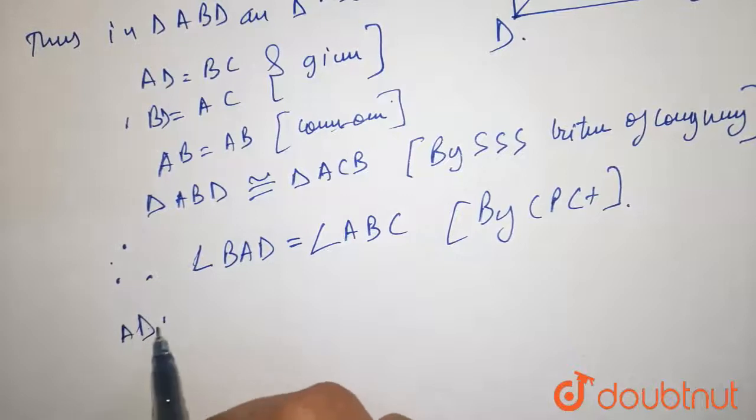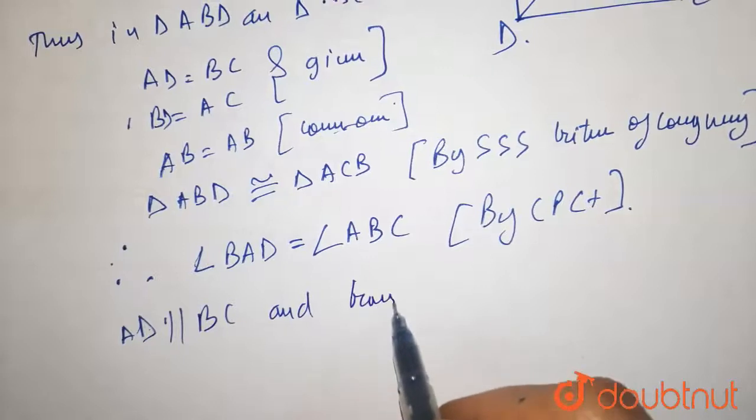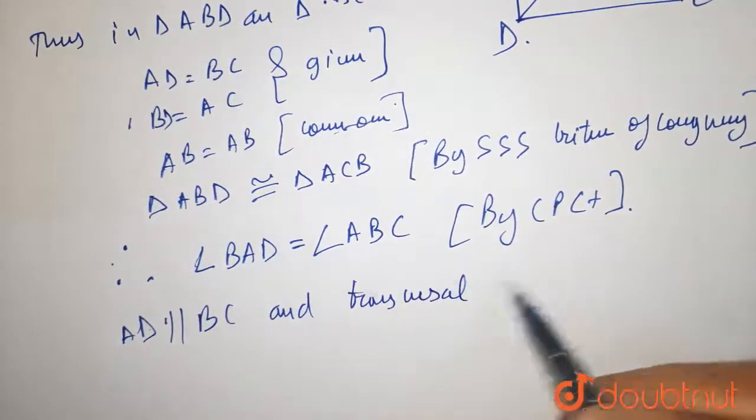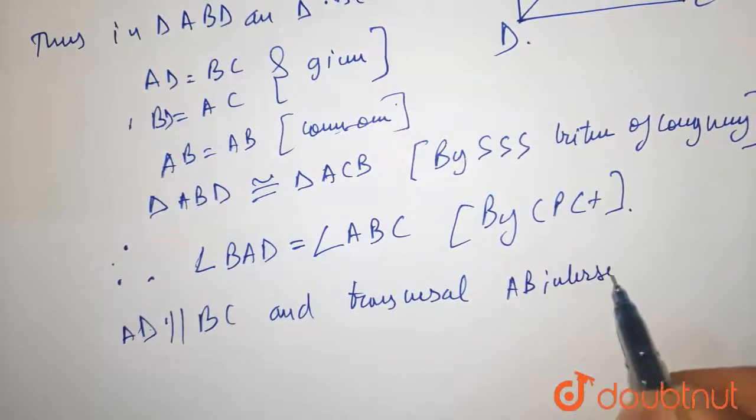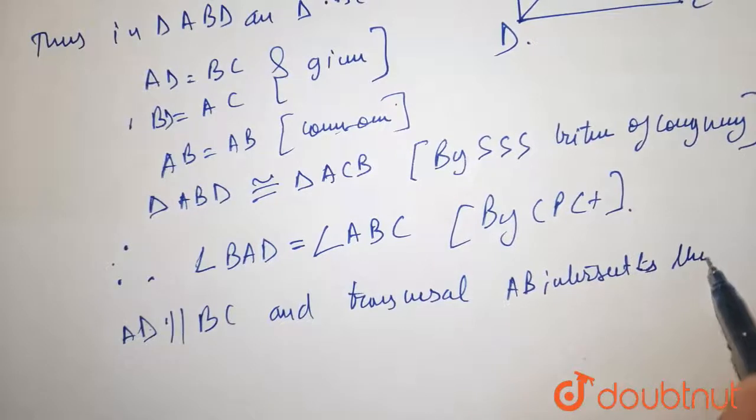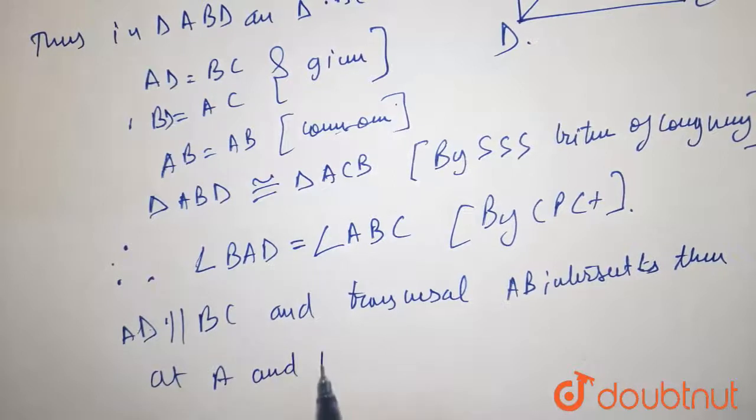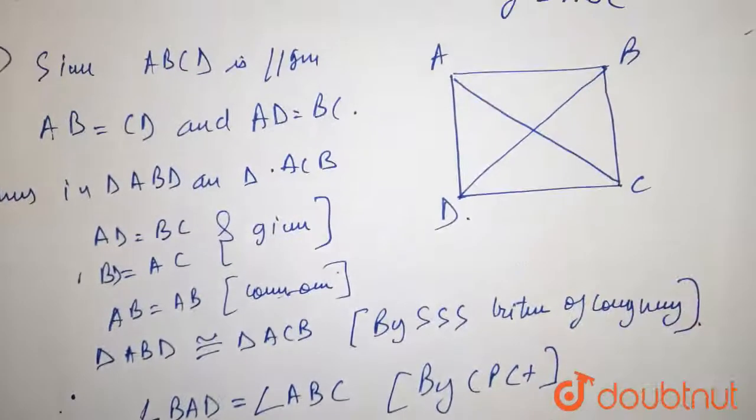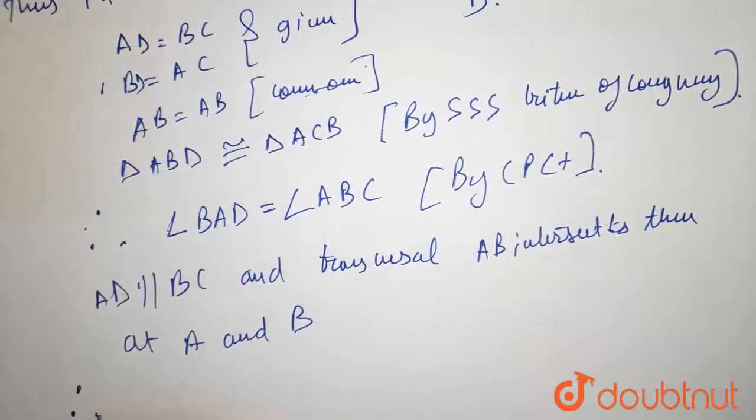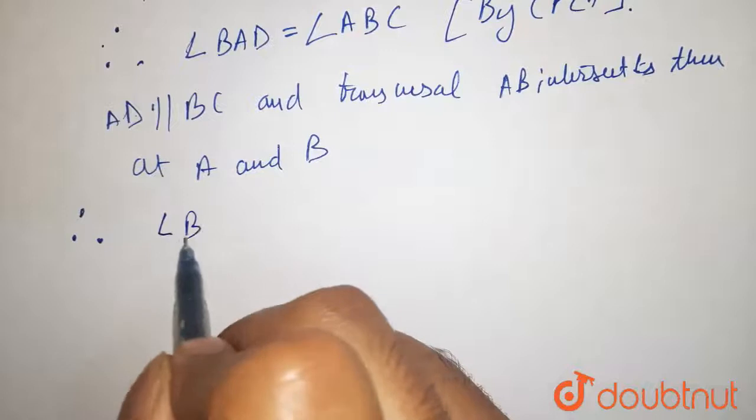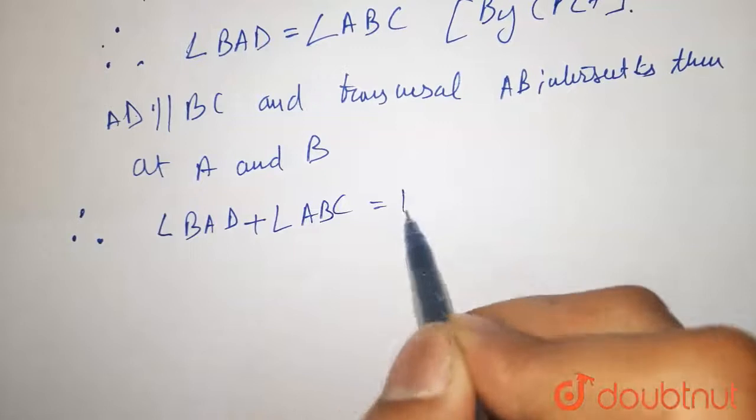AD is parallel to BC and transversal AB intersects them at A and B.